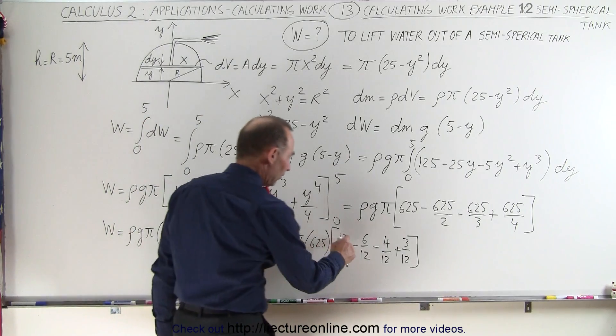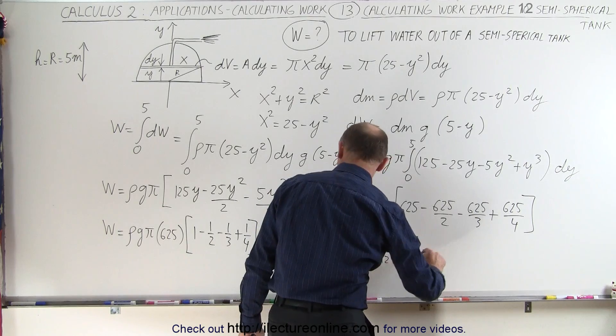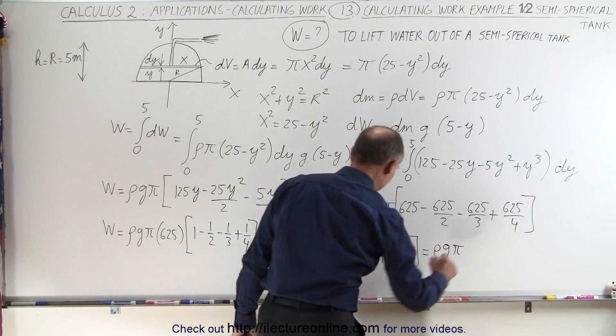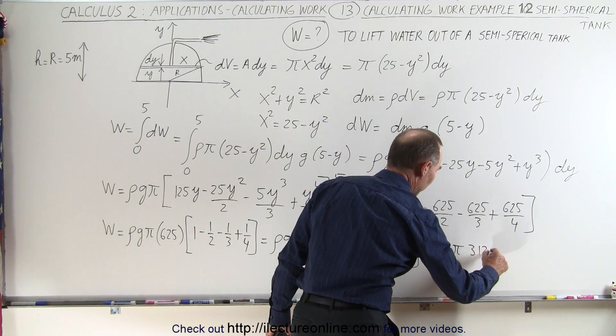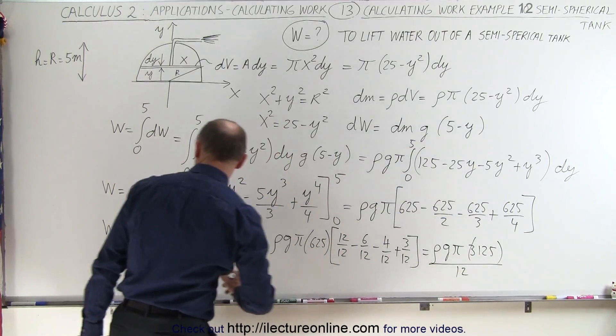This would be 12 minus 6 is 6, minus 4 is 2, plus 3 is 5 twelfths. So this is equal to density times g times π times 5 times 625, which is 3,125, and then divide the whole thing by 12.